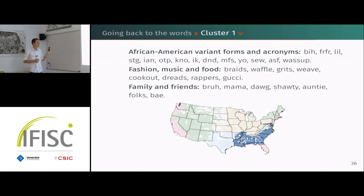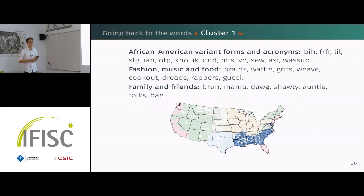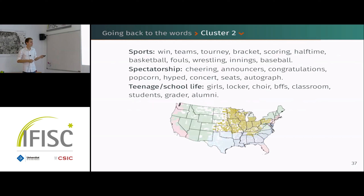For cluster one — the dark blue region — there is a large influence of African American culture: many forms from African American Vernacular English. For cluster two, around the Midwest, there are lots of mentions of spectator sports.